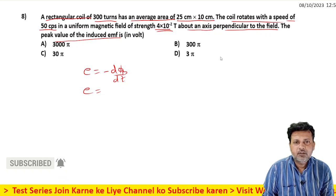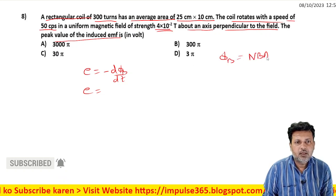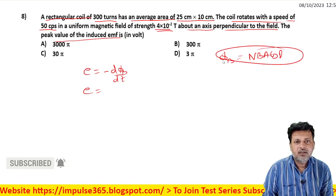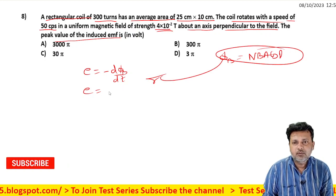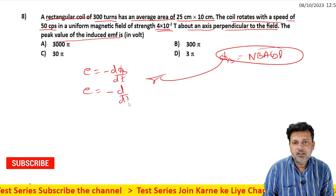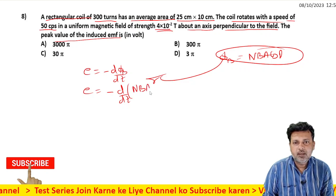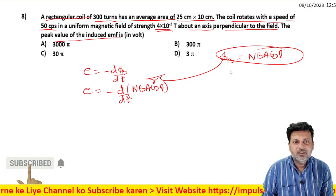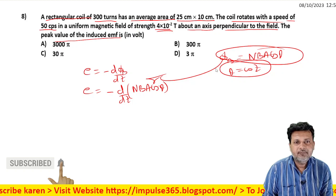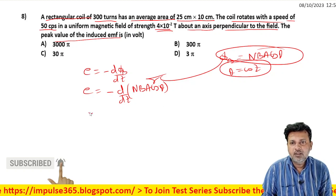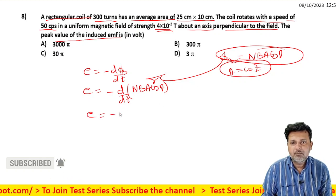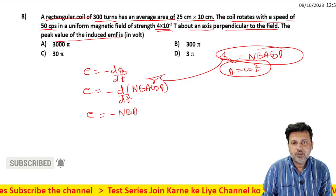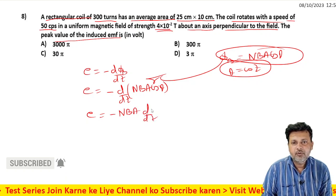For a rectangular coil, e = -d(NBAcosθ)/dt. Here θ = ωt, where ω is the angular velocity and is constant. The magnetic field B and area A are also constant.